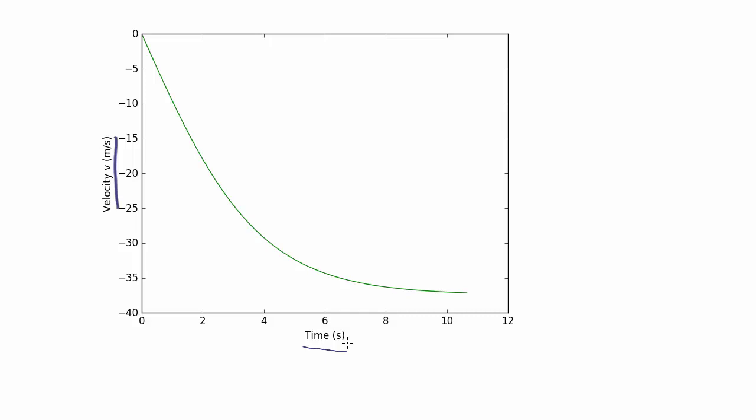So what is the acceleration here? We could take the starting point and the ending point. The velocity starts at zero and ends up at about minus 37. So the acceleration is going to be equal to the change in velocity, which is minus 37 meters per second, divided by the number of seconds, which is 10. So that's minus 3.7 meters per second squared.